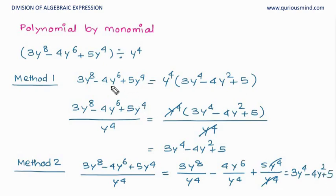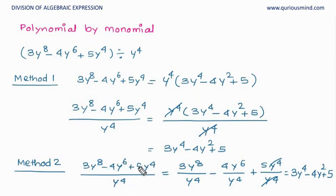So in the first method, we found the factors first and then did the division. In the second method, we divided each term individually by the monomial. This is what we have learned with whole numbers — we do the same thing, applying the same methods for algebraic expressions as well.